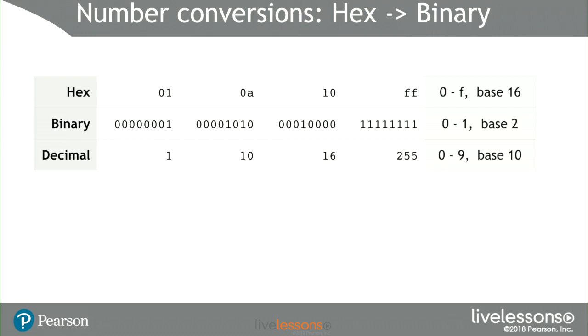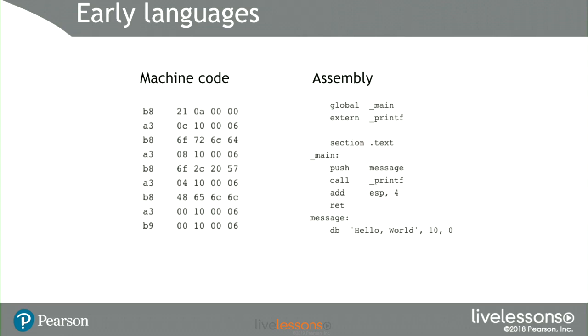We use base 10 only because we have 10 fingers. Some ancient cultures used base 5 so they could use one hand and do multiples on the other. Because computers understand 0 and 1 — only two states — it's most convenient to represent their numbers in a power of two. Hex is 16, which is 2 to the power of 4, so each four digits of binary translates to one digit of hex. If you're interested in learning more about this, you should definitely look it up — this is just a brief overview.